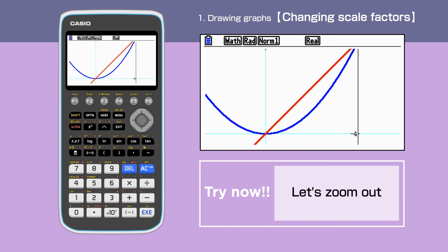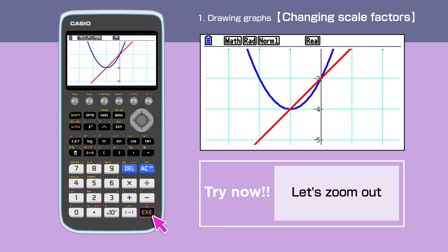Next, we will zoom out. Press Shift, F2, F4, then execute. The graphs have been zoomed out with the scale factors we have just set.